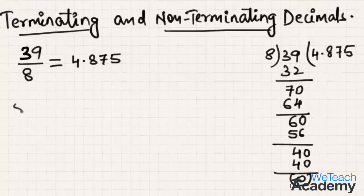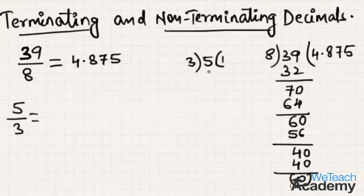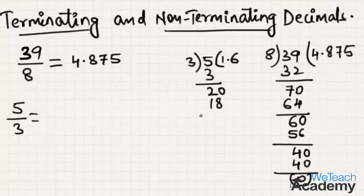Now let us consider one more fraction in decimal form. Let us divide 5 by 3. Now 3 times 1 is 3, and 5 minus 3 gives remainder 2. Since 2 is not divisible by 3, we place a decimal point here and write 0. Now 3 times 6 is 18, and 20 minus 18 gives remainder 2.